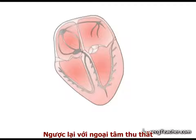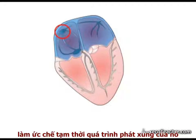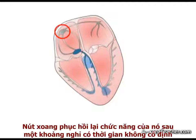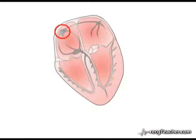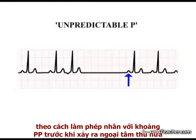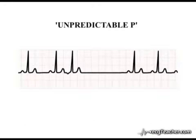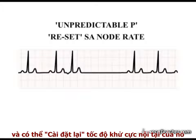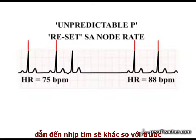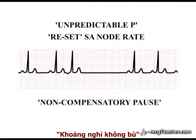In contrast to ventricular ectopics, discharge from an atrial ectopic will usually result in depolarisation of the cells of the SA node, temporarily suppressing their discharge. The SA node recovers its function after a pause of variable duration. As the duration of recovery is variable, the timing of the next P wave is not predictable. The next sinus discharge does not occur at a simple multiple of the P-to-P wave interval preceding the ectopic. Premature depolarisation of the SA node may also reset its inherent rate of spontaneous depolarisation, leading to a different heart rate — either faster or slower — following the ectopic. A pause with these characteristics is termed a non-compensatory pause.